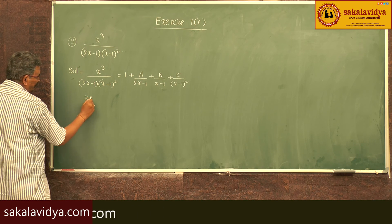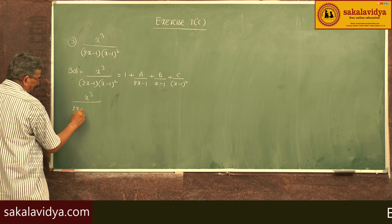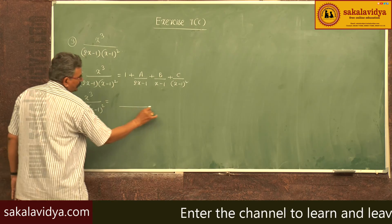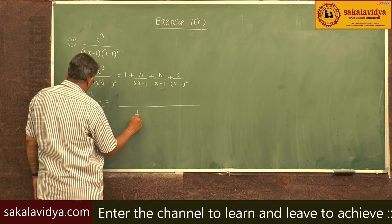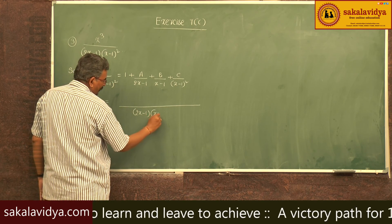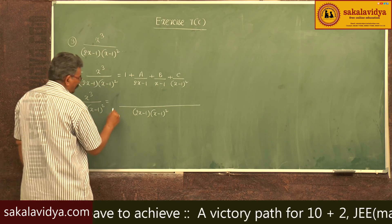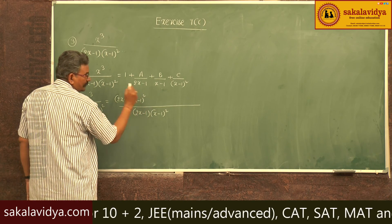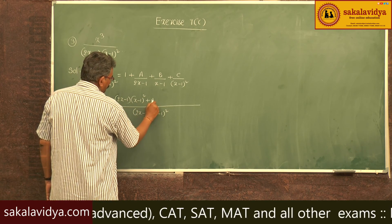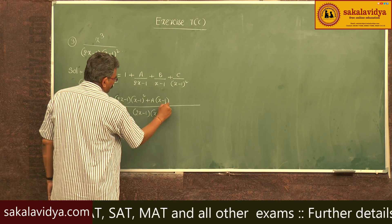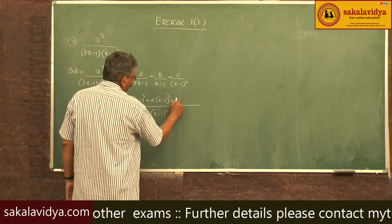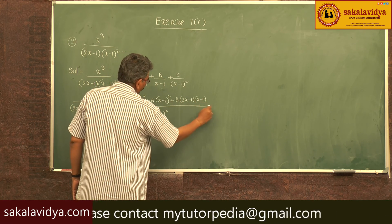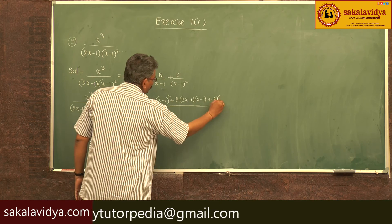Now, x cube by (2x minus 1)(x minus 1) whole square equals (2x minus 1) whole square times (2x minus 1)(x minus 1) whole square plus A of (x minus 1) whole square plus B of (2x minus 1)(x minus 1) plus C of (2x minus 1).